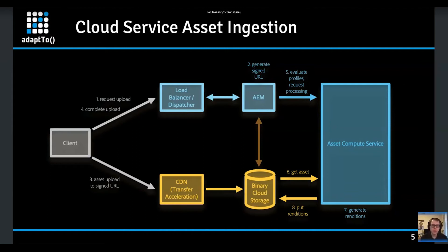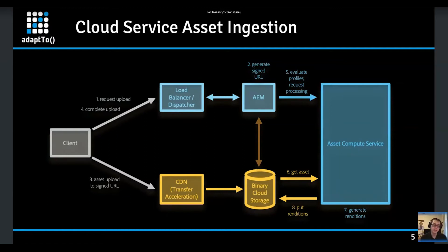Once AEM receives the complete upload message, it then goes to the Asset Compute Service, sending a pre-signed URL and telling the service which renditions it needs based on processing profiles. The Asset Compute Service interacts directly with the binary cloud storage provider to pull the asset, generate renditions, stick them back into the binary cloud storage provider, and then notifies AEM that it's completed.